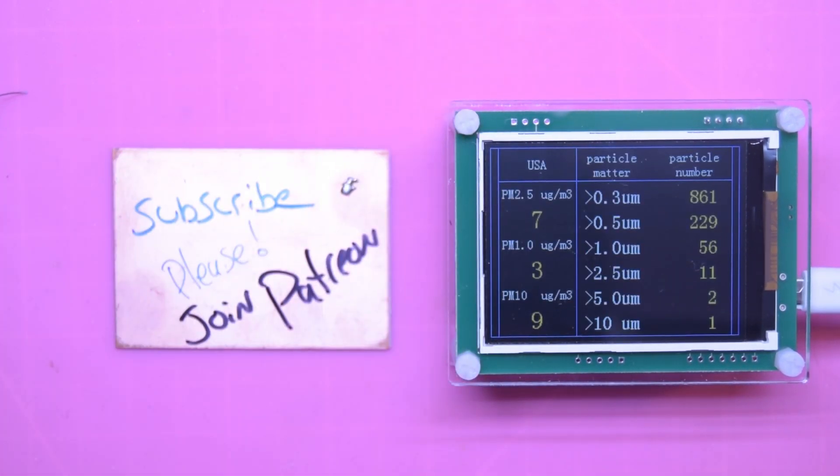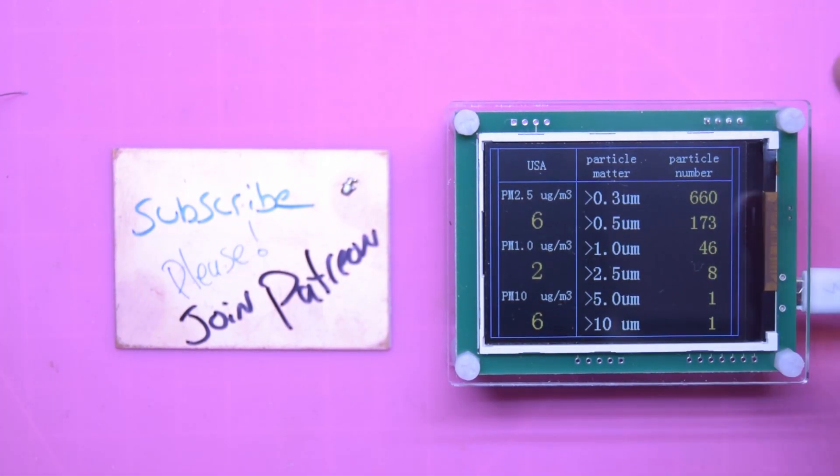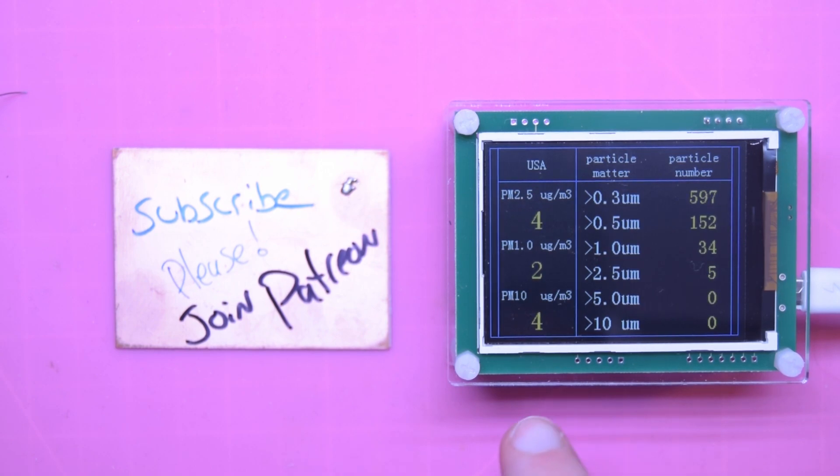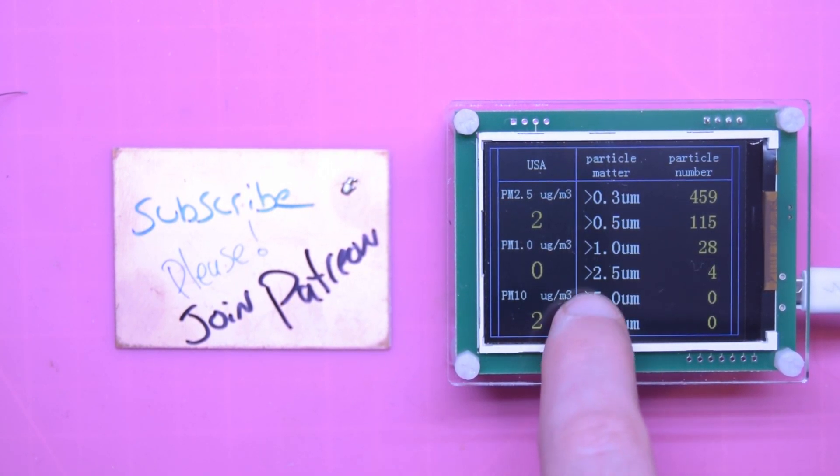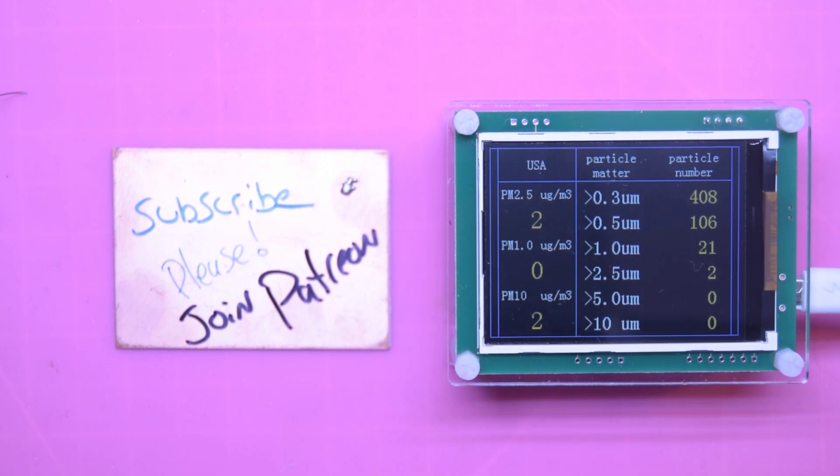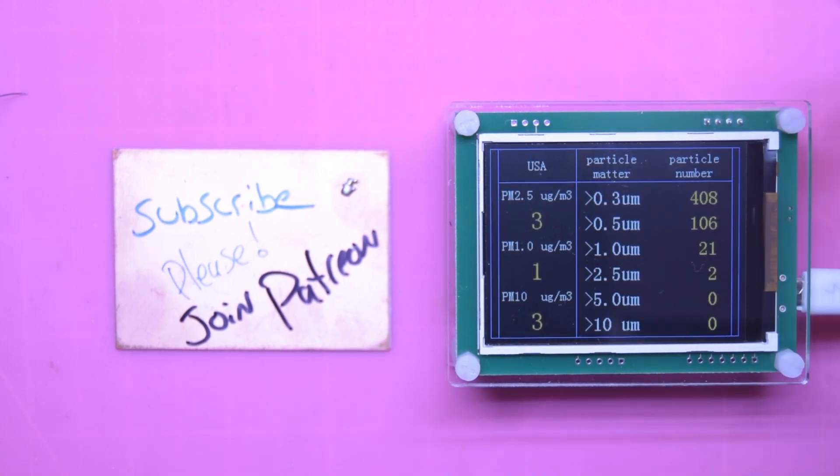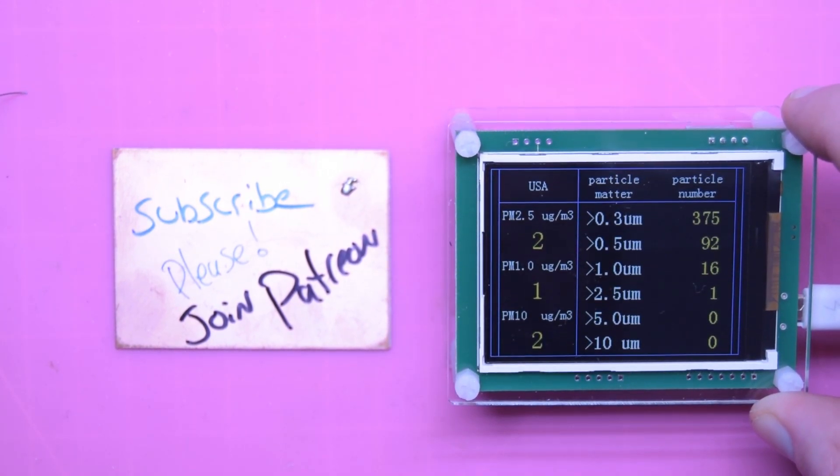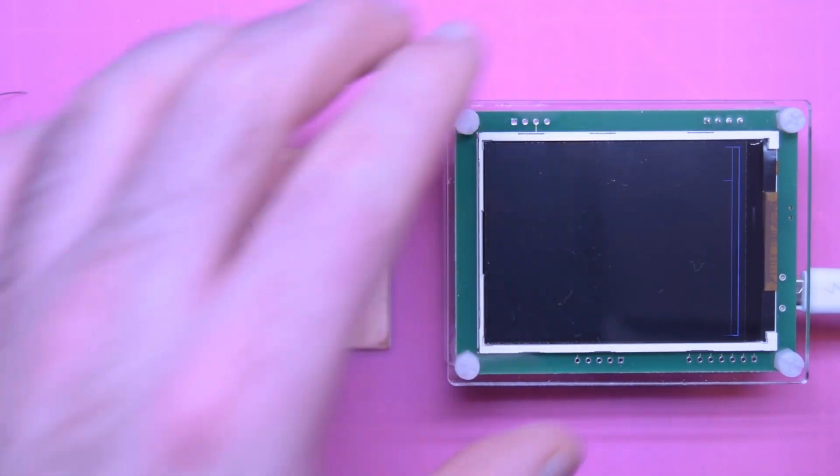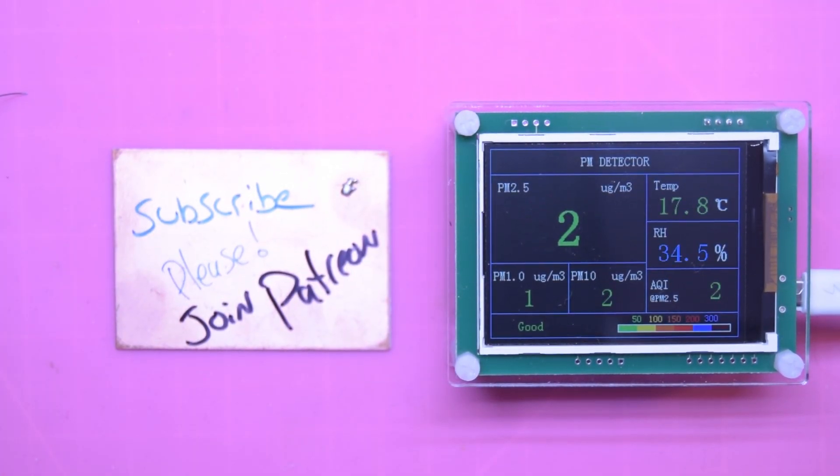And you can even hit this little button on the side, and it gives you the counts. So bigger than 10, I think that's 10 micron, 5 micron, 2.5, 1, 0.5, and 0.3. So it kind of tells you the amount of stuff that it's been reading. They make some of these in data logging and non-data logging.